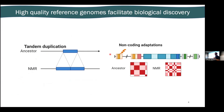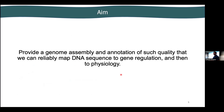We know that a lot of these evolutionary changes that lead to extreme adaptations tend to live in regions involved in tandem duplications and non-coding adaptations, like changes in enhancer regions or DNA topologies. So what we wanted to do was build a genome assembly and annotation of such quality that we can start mapping these extreme adaptations back to a DNA sequence.